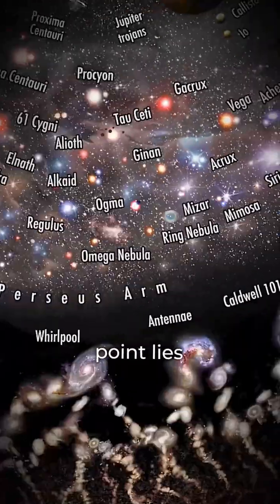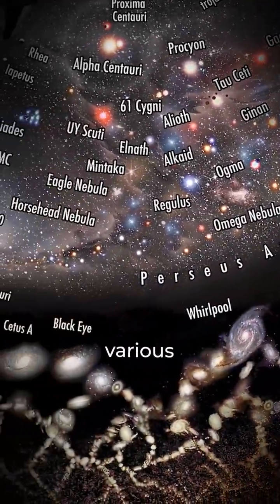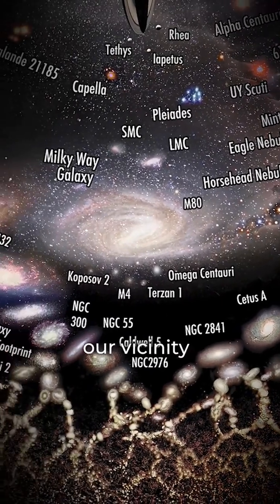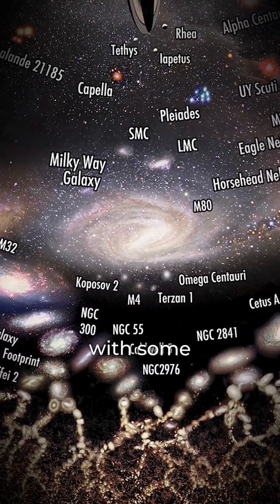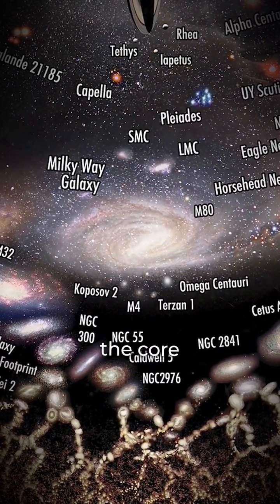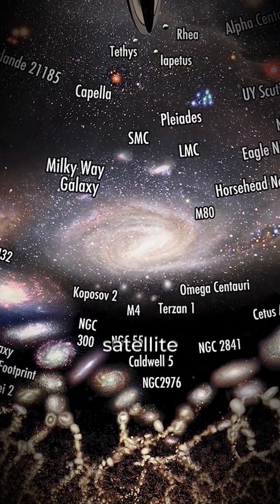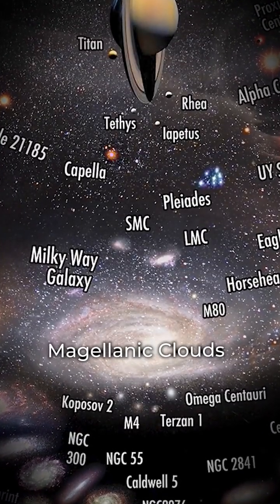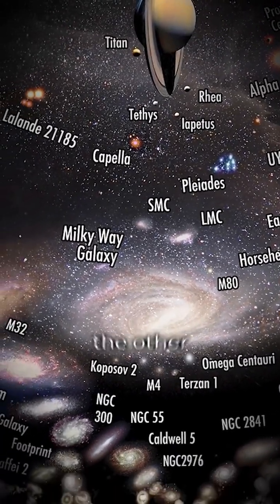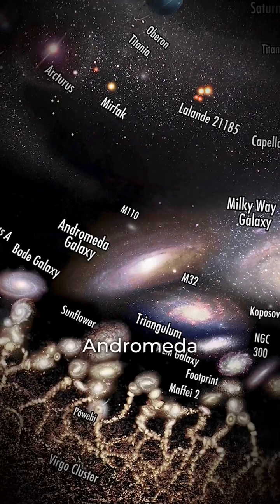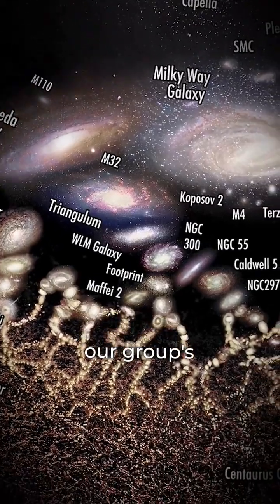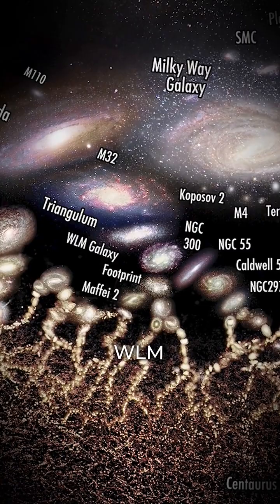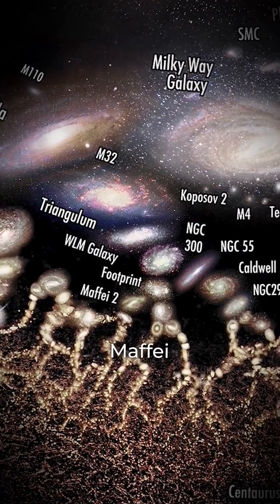Beyond this point lies the Perseus arm, along with various star clusters and nebulae notable from our vicinity. The Milky Way's disk is depicted with some prominent globular clusters near the core and a collection of satellite galaxies, including the Small and Large Magellanic Clouds. It is situated near the other major spirals of the local group — Andromeda and Triangulum — with our group's boundary delineated by the irregular galaxy WLM and our neighboring galaxy group, Maffei.